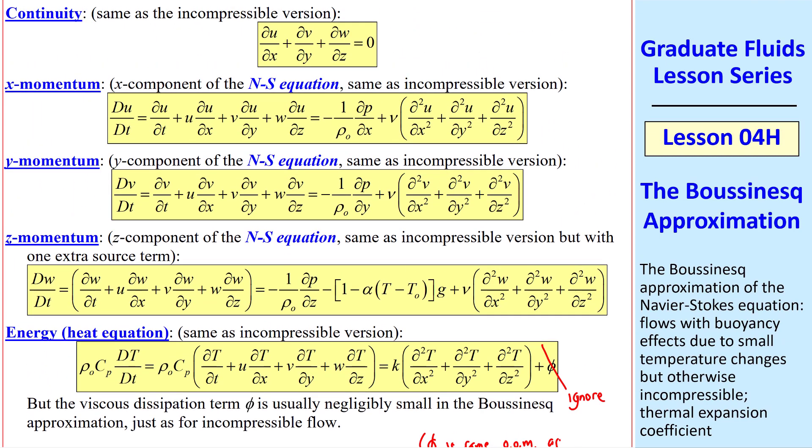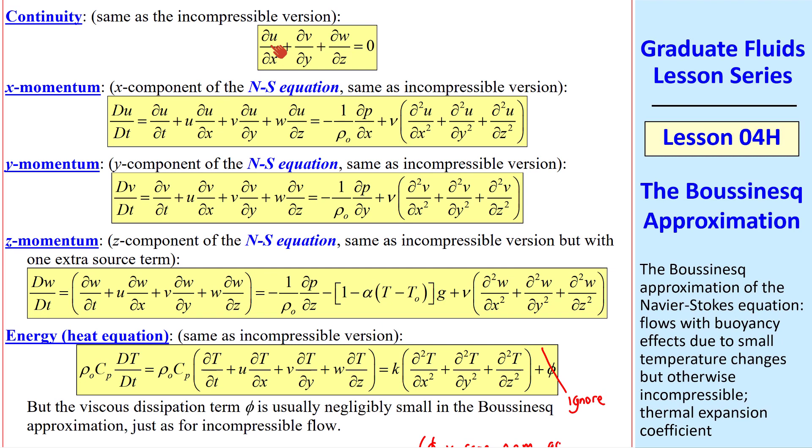So in summary, for a three-dimensional problem in Cartesian coordinates, we have u, v, and w, our velocity components, pressure, and temperature as our unknowns. That's five unknowns. And we see here that we have five equations: continuity, the three components of the Navier-Stokes equation, and the scalar energy equation. Thus the problem is mathematically well-posed. We'll use the Boussinesq approximation later in the course. Again, it's an approximation, but it's a good one when temperature changes are small, so that this linear approximation of density is a reasonable approximation.